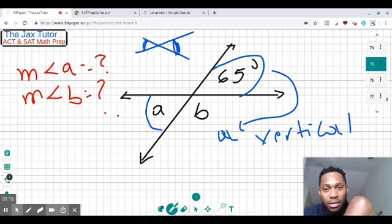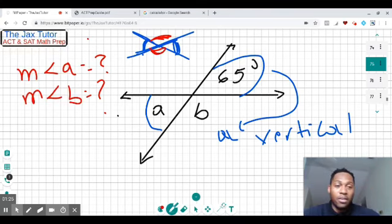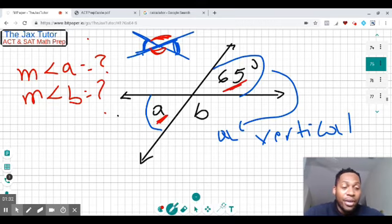This angle and this angle are going to be vertical angles, but also this angle and this angle are going to be vertical angles. So as you can see, A and this 65 right here, they are vertical angles.